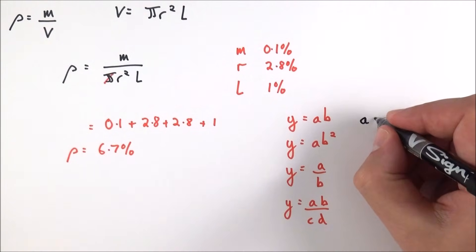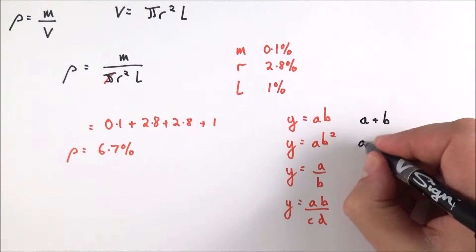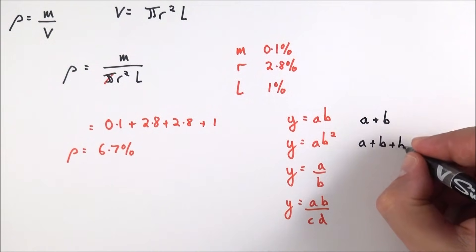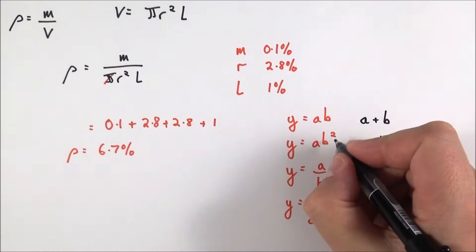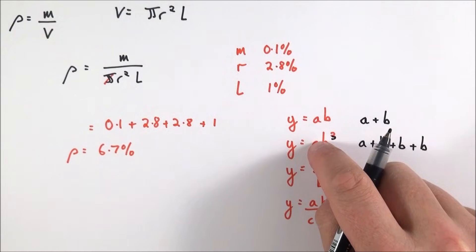Here we've got the uncertainty in a added to uncertainty in b, and we don't square it, but we add the uncertainty in b on again. If b was cubed, we just add it on another time. So every time this term comes up here, we just add the uncertainty on.